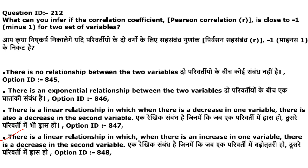Next: if the Pearson correlation coefficient is close to minus 1 for two variables, what can you infer? If the coefficient is +1, as X increases Y also increases. If it is minus 1, as X increases Y decreases — an inverse linear relationship. The answer is: there is a linear relationship in which when one variable increases, the other decreases. Answer is option 4.